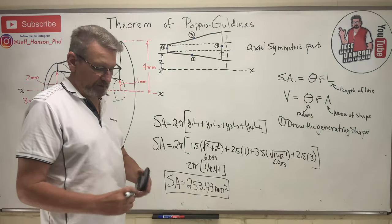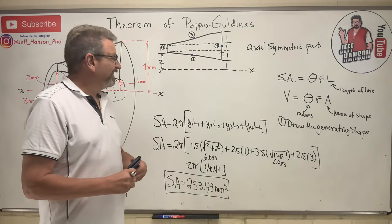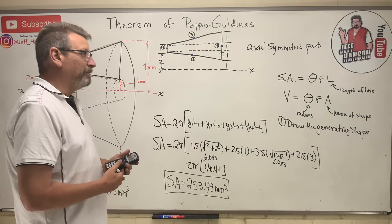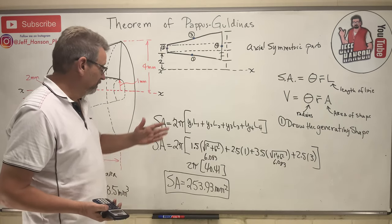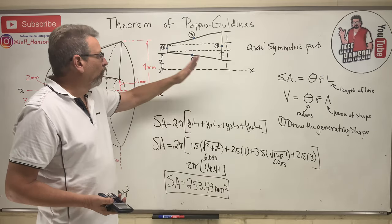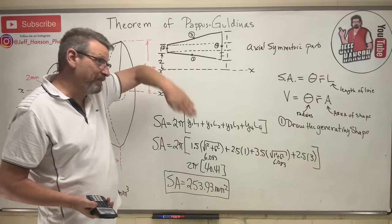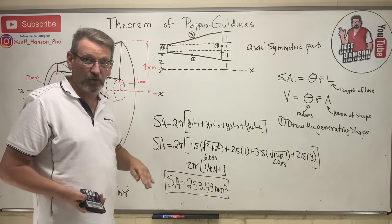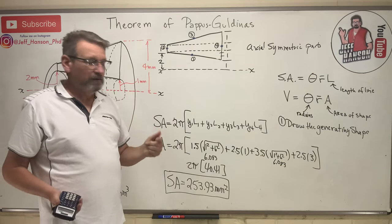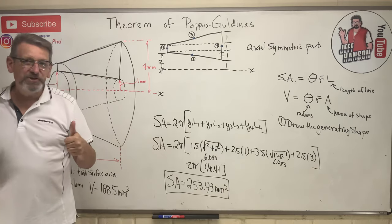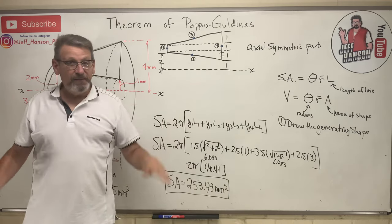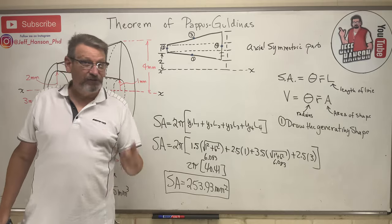And that, my friends, is how you do Pappus-Guldinus problems. The most important step is step one: draw the generating shape — what shape sweeps out the object you're analyzing. That wraps up chapter nine on centroids. See you on the next video.